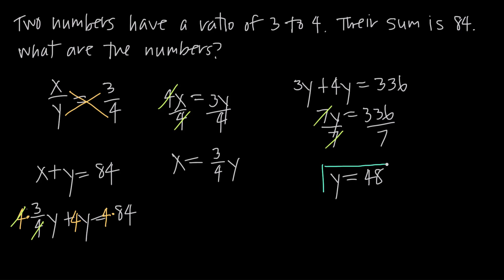Now I have this value here for y. I need to use this to find the corresponding value of x. Luckily, I have an equation right here for x in terms of y. So I just plug this value for y into this equation, and I'm going to get x is equal to 3 over 4, and then we know y is equal to 48, so I'm going to plug in 48.